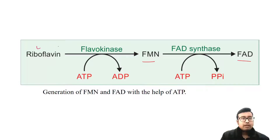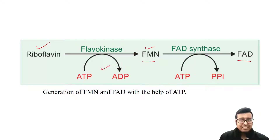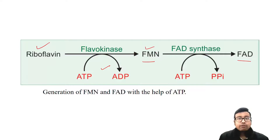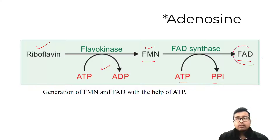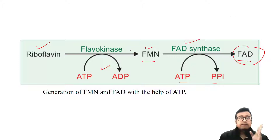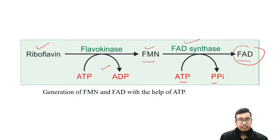From riboflavin, flavokinase enzyme catalyzes the formation of FMN with use of one ATP — one phosphate group is used. And from FMN to FAD, ATP and pyrophosphate (PPi) are involved, so the adenine group is added. So generation of FMN and FAD both require ATP.